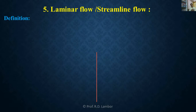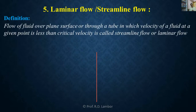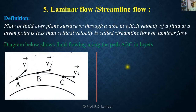When fluid flows over a plain surface or through a cylindrical tube, and velocity of fluid at any point is less than that critical velocity, then that flow is called laminar flow or streamline flow. We will consider fluid flowing over a curved path ABC in different layers, as shown in this diagram.